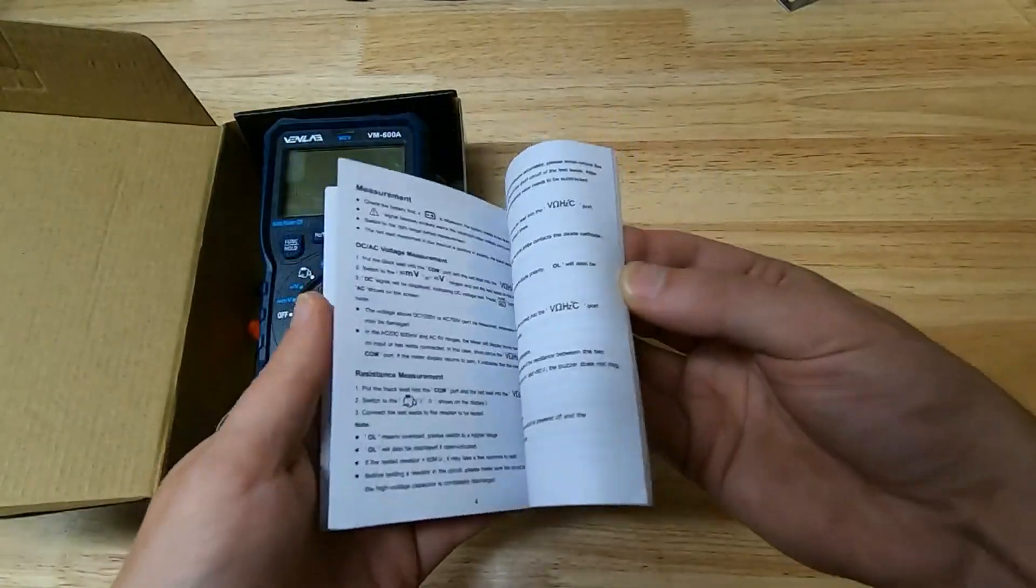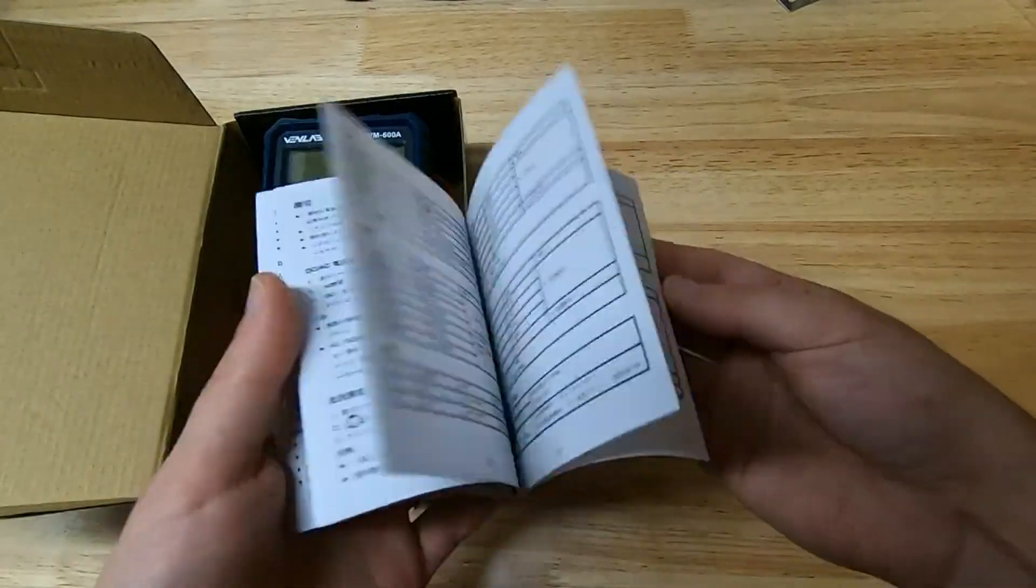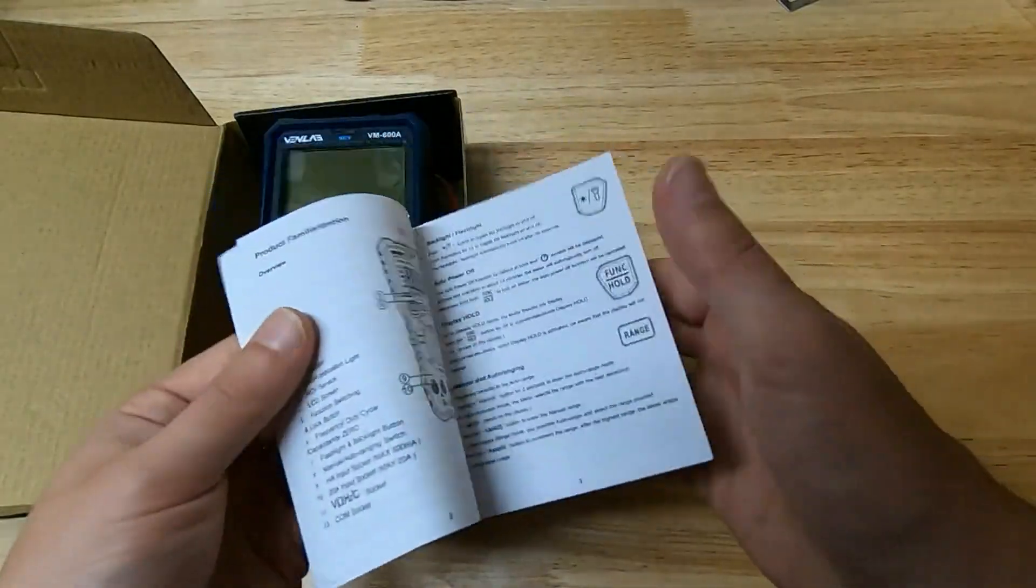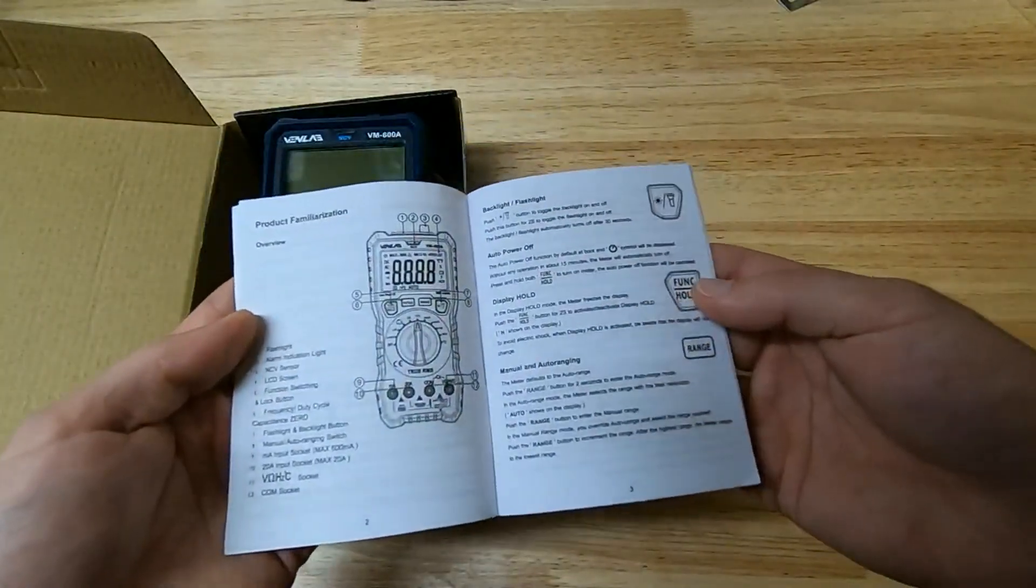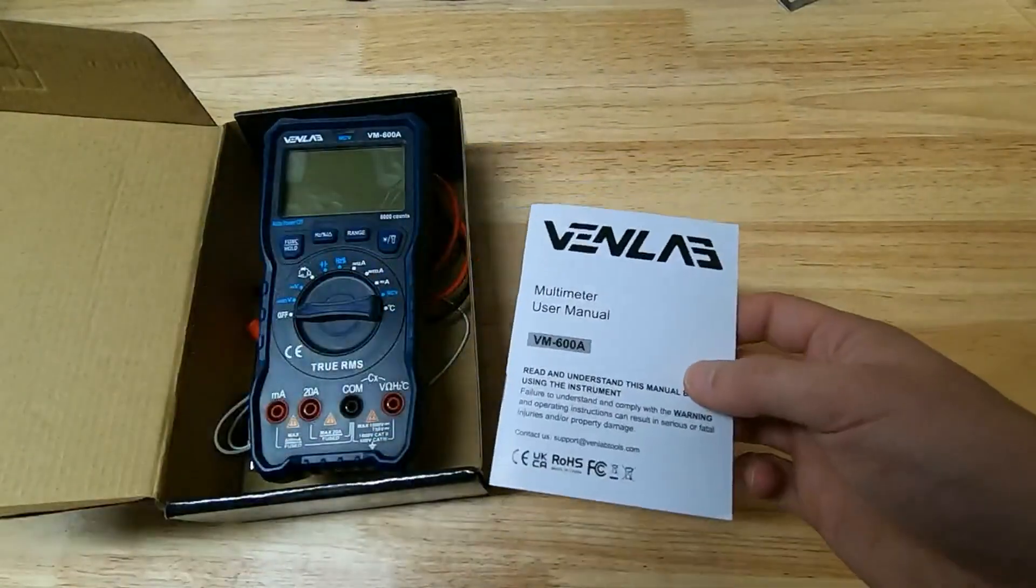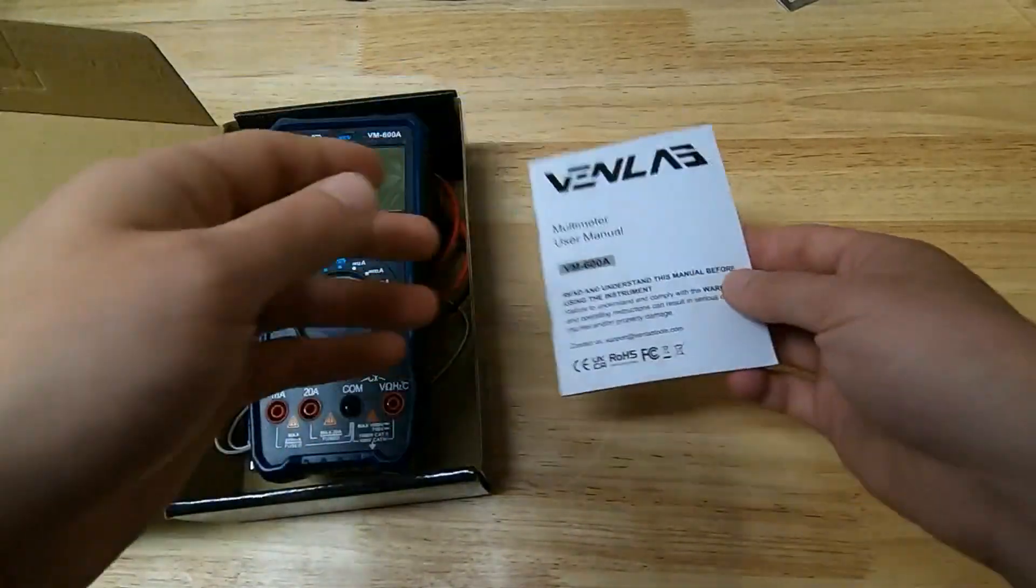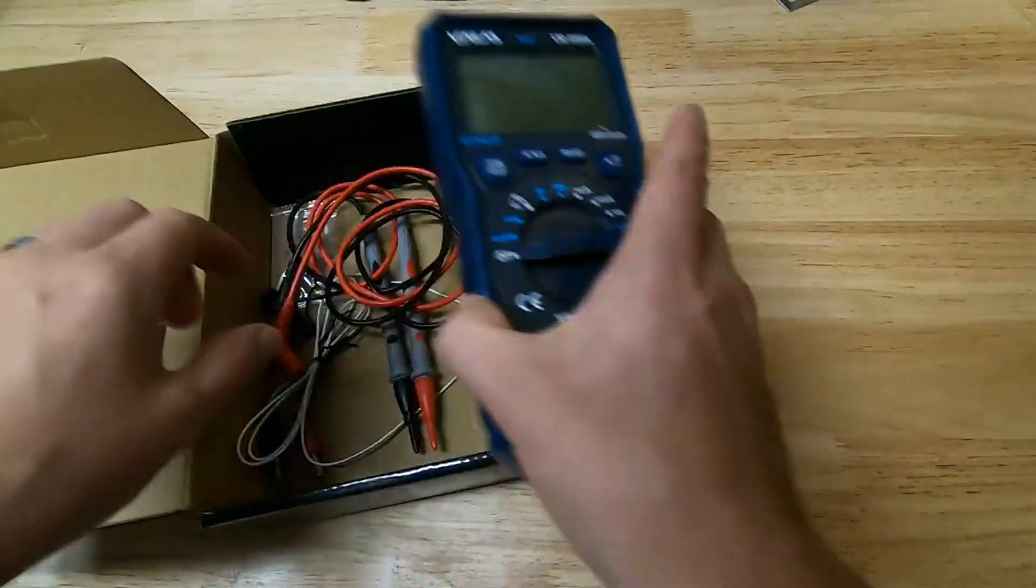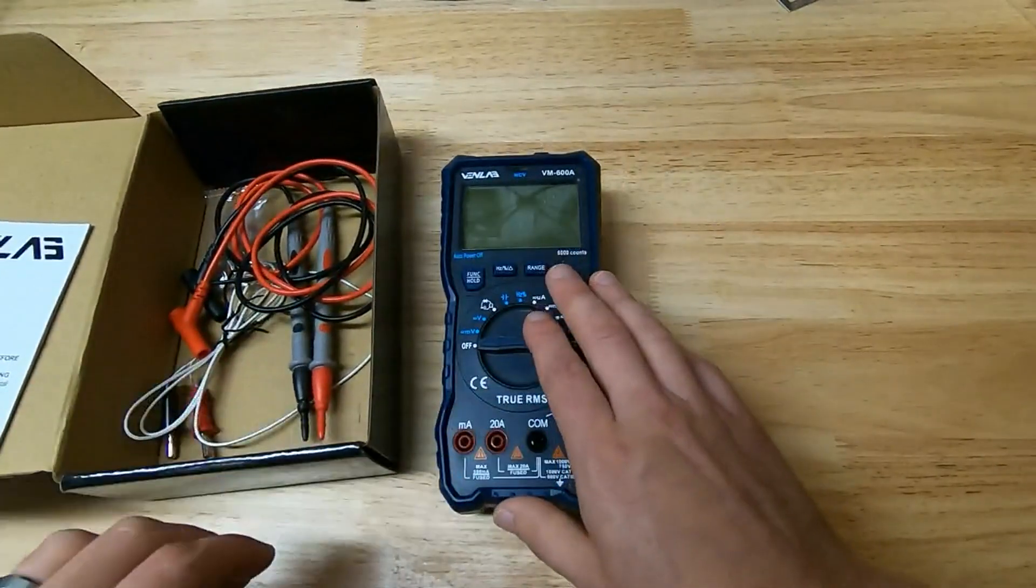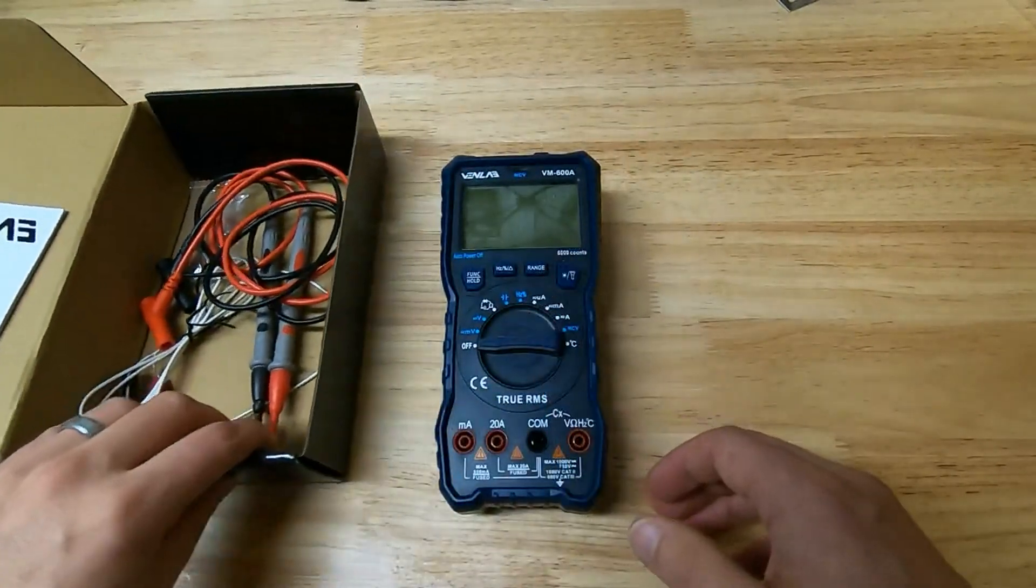It comes with a small but functional and usable user manual that explains all of the functions of the multimeter. You'll want to hang on to that because there's a couple of things that you need to probably remember that aren't always self-evident right on the meter itself.